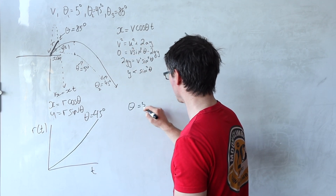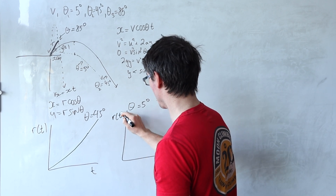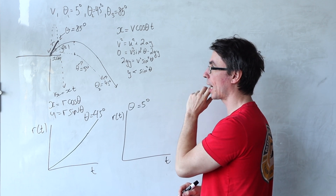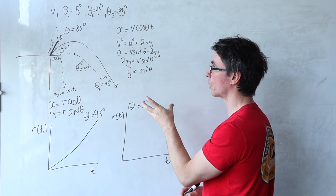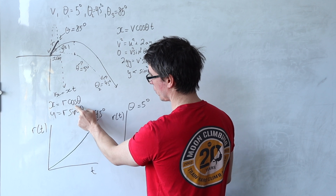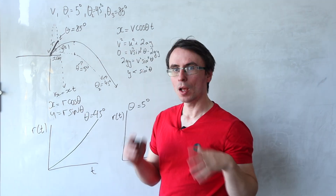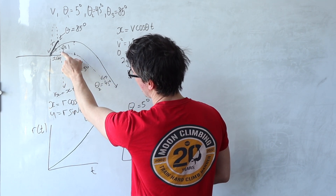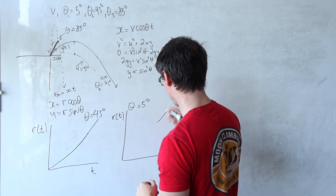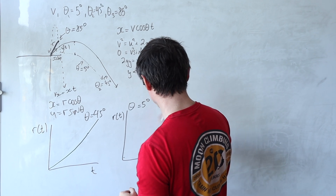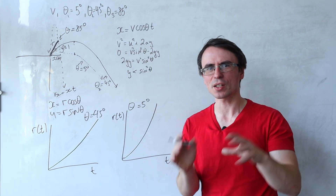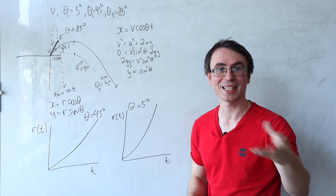For theta equal to 5 degrees it's going to be pretty similar. Is the overall distance going to be higher for smaller values of t? Well, when theta is 5 degrees, x = r·cosθ is going to be bigger. Also, the projectile goes up and comes down much quicker because it barely reaches its maximum height. So for higher distances this will be quicker - it will have a higher gradient, giving a curve like this.